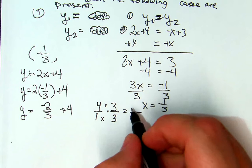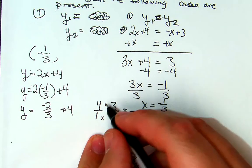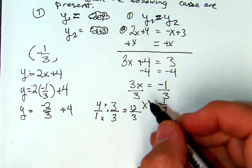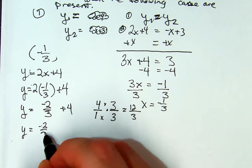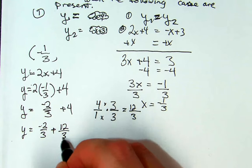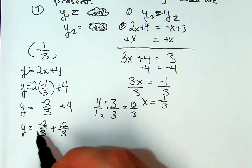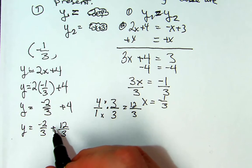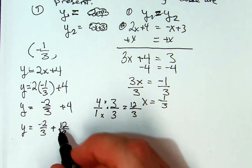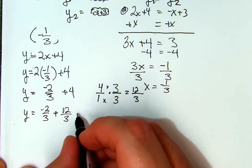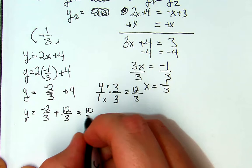So I get 4 times 3 is 12. And so now I get y is equal to negative 2 thirds plus 12 thirds. So what's negative 2 over 3 add that to 12 thirds? Negative 2 plus 12 is 10 thirds.